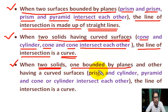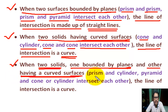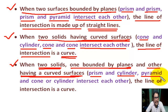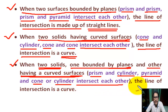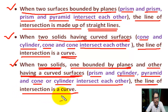When one solid is bounded by a plane and the other has a curved surface — such as prism and cylinder, or pyramid and cone — and they intersect each other, then the line of intersection is a curve.